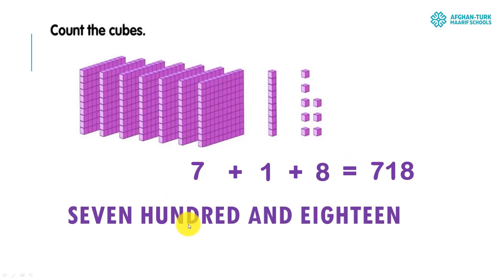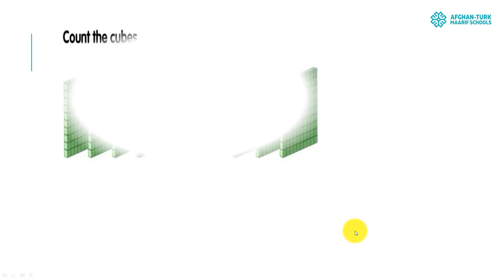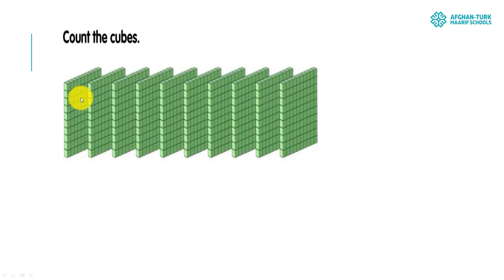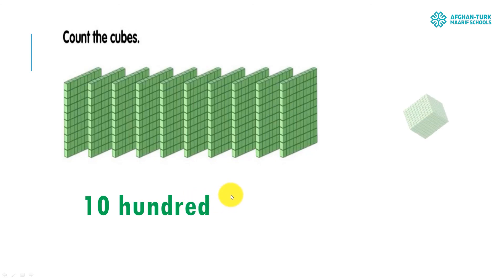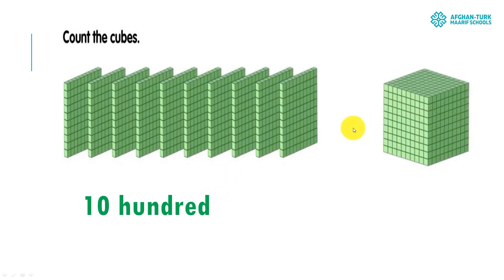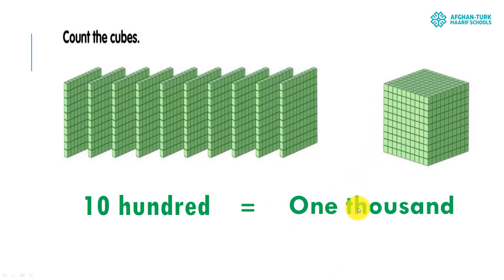Count the cubes: 100, 200, 300, 400, 500, 600, 700, 800, 900 — and after 900 we have 10 more hundreds, which equals 1000. So 10 hundreds equals 1000. Thank you so much, have a nice time!